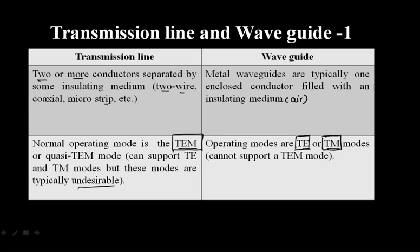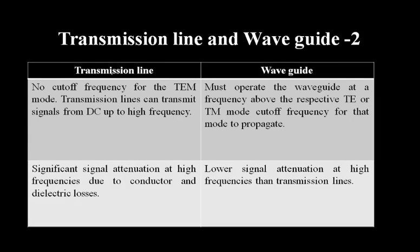When dealing with a multi-conductor transmission line you will have TEM mode; when going for a single-conductor line it supports only TE or TM mode. For TEM mode in a transmission line there is no cutoff frequency, but for waveguides there is a cutoff frequency for TE and TM modes. Waveguides operate only above the cutoff frequency, so while designing a waveguide you must account for the cutoff frequency of each mode.